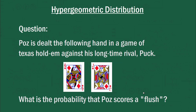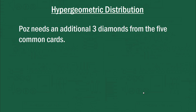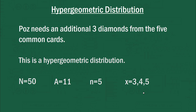To get a flush, Poz needs an additional three diamonds from the five common cards. This is definitely a hypergeometric distribution. He's already got two cards in his hand, so realistically we've got a population of 50 unknown cards — that's why N is 50. Out of those 50 cards, 11 of them are diamonds: there's a total of 13, but he already knows two are in his hand. There are about to be five cards dealt from that 50, so we're after the probability of three, four, or five diamonds being dealt into those five cards.